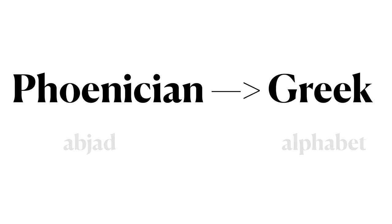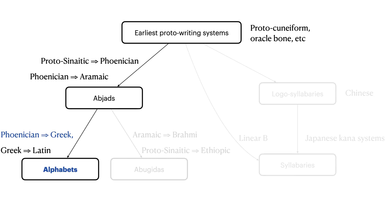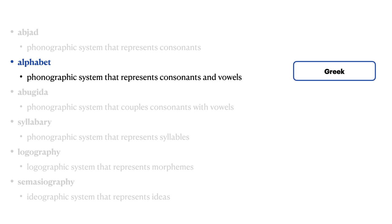The Phoenician abjad was the parent system of the Greek alphabet. So we see here that we had the earliest proto-writing systems eventually developing into abjads, and then from the Phoenician abjad led to the Greek alphabet. An alphabet is a phonographic writing system that represents both consonants and vowels, each using their own independent symbols.